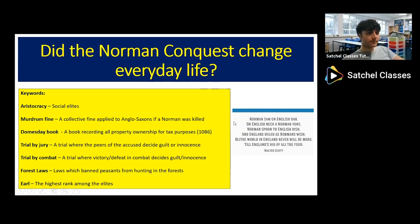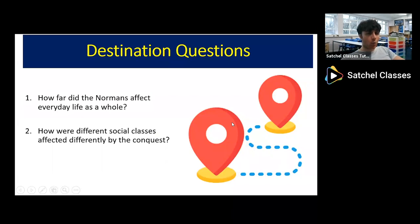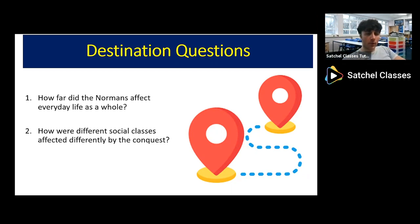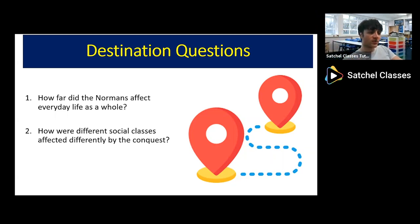Now let's look at our destination questions for today's lesson. First: how far did the Normans affect everyday life as a whole? You'll see that in some areas there was huge change, and in others there was relative continuity — meaning things stayed the same. Second: how were different social classes affected differently by the conquest? Social classes range from the aristocracy at the top, down through knights and burgesses, to free men and villains among the peasantry.